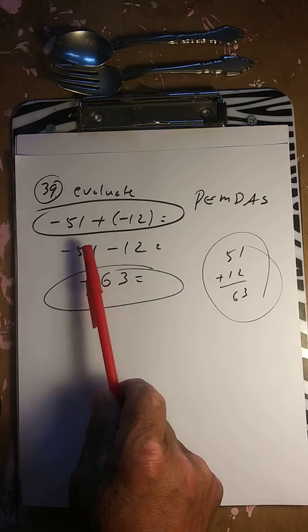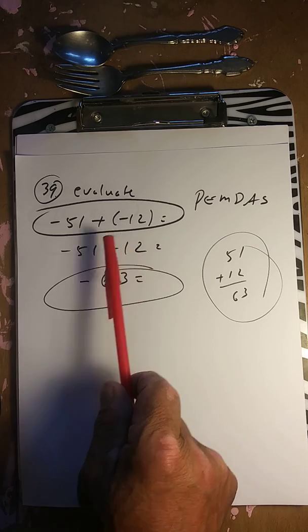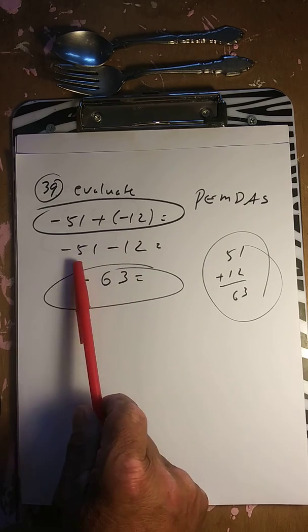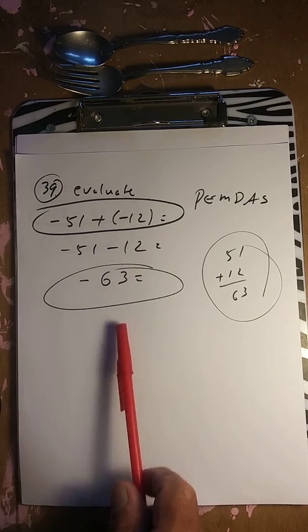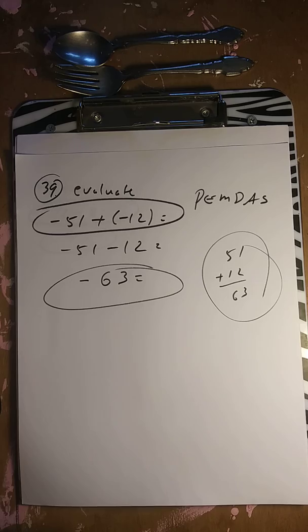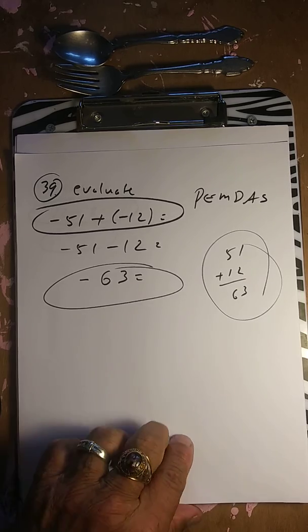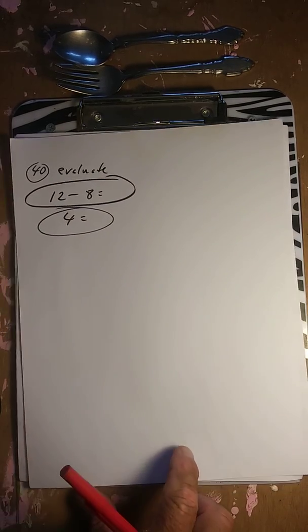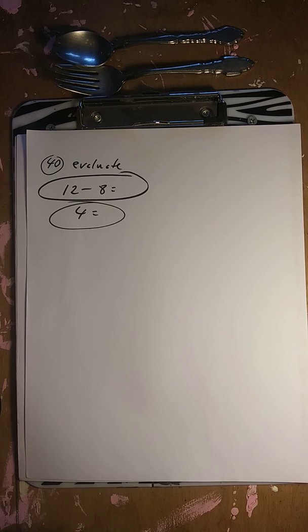Evaluate negative 51 plus negative 12: positive negative is negative, so negative 51 and negative 12 is negative 63. Next: 12 minus 8 is positive 4, or negative 4 depending on sign.